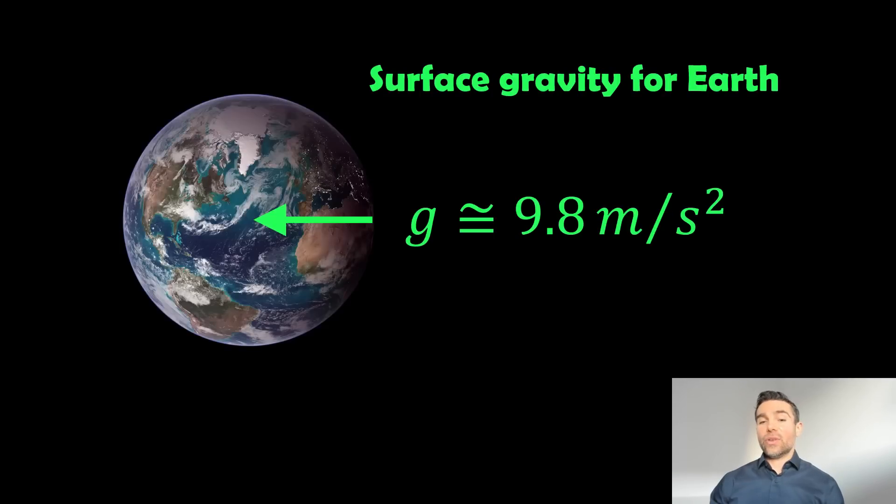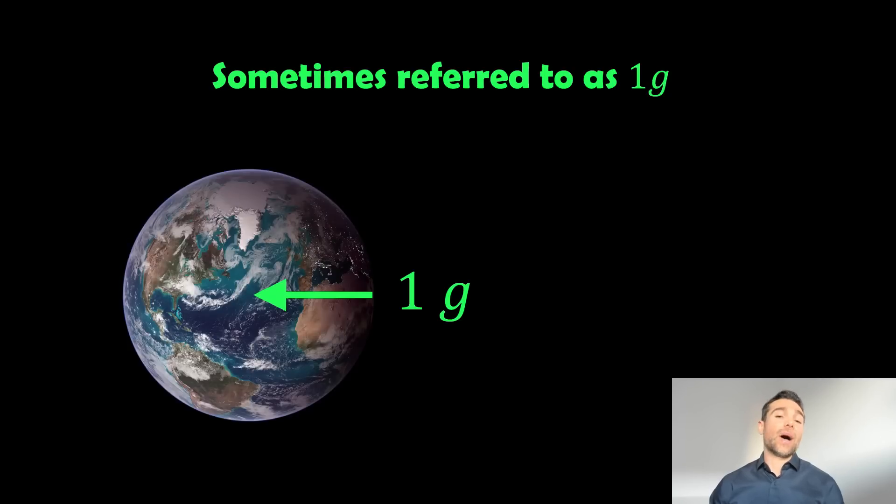So for Earth, if we do this here, we do it at the surface, we get a surface gravity of about 9.8 meters per second squared. It's approximately that. And that also can be given in terms of g. So it could be normalized or it's given a value of 1. So 1g would be the gravitational acceleration at the surface for Earth. And that's useful to know because we can then use that as a reference point for maybe other planets or other things.